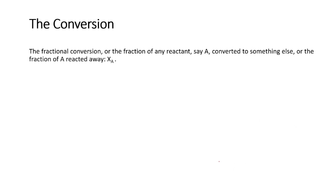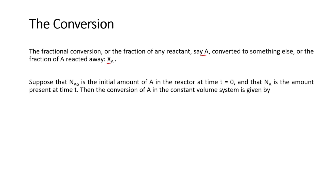Now we will talk about conversion. Conversion means how much a given species has reacted and been converted to another species. Suppose in the system you have a species A — we want to know how much of species A has been converted to a product, say species B. This is answered by the conversion, which is denoted by xa.